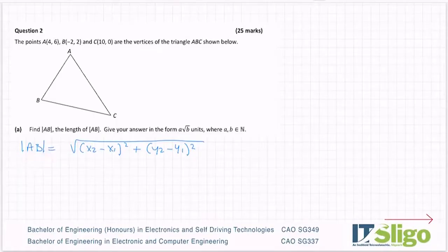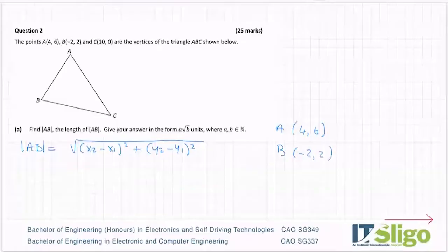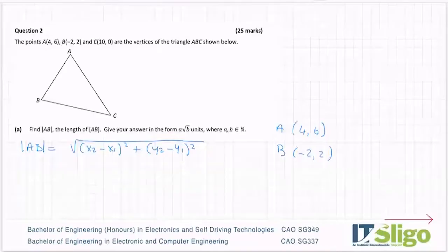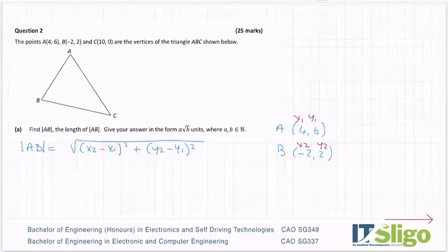Next step: if it's the length of AB that you're doing, take down the points A and B, which is (4,6) and B is (-2,2), and label them. You're labelling them as per the formula — x1, y1 of your first point, x2, y2 of your second point. That's why they're called x1, y1, because every point is x, y. And then you sub in: so instead of x2 you do minus 2, instead of x1 you do 4, and so on and so forth.